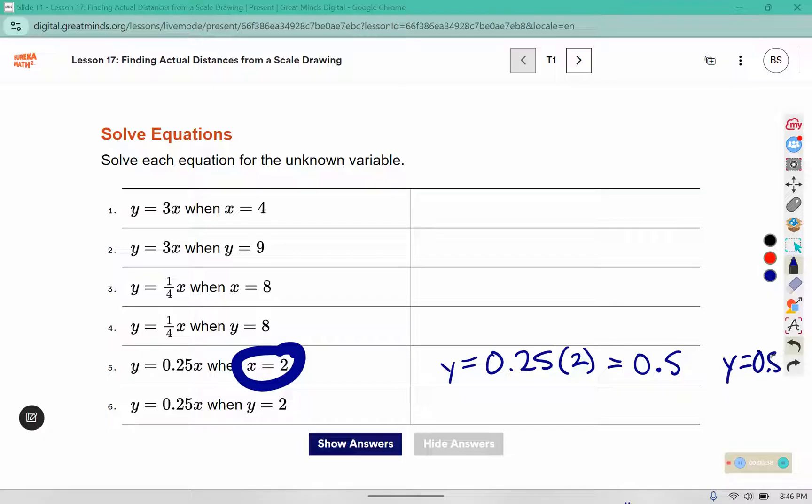In this one it says Y equals 2, so we're going to put that in the Y position. To solve it for X, I have to undo what is happening to X. Right now it's being multiplied by 0.25, so I have to undo that by dividing.